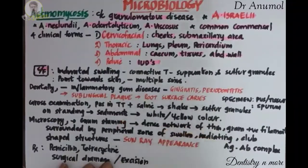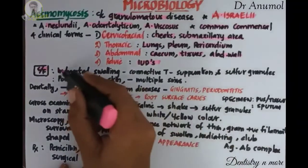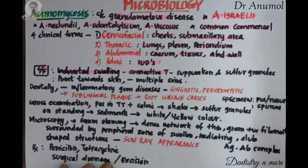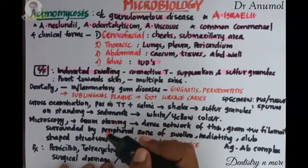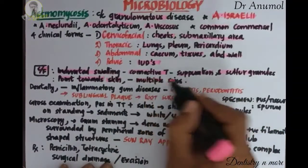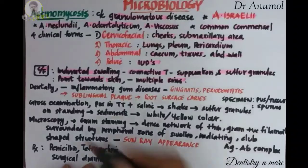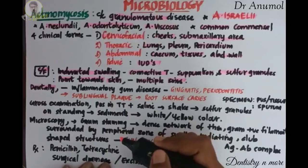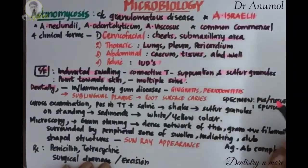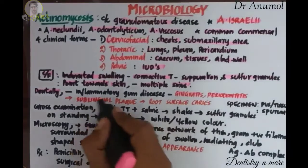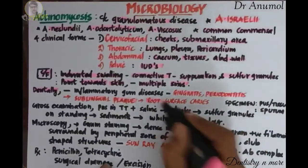The disease presents as indurated swelling commonly found in connective tissue. We can see suppuration and sulfur granules associated with this disease, which always points toward the skin, and multiple sinuses can be seen. Dentally, it is implicated in all types of inflammatory gum diseases like gingivitis and periodontitis, and also in sublingual plaque, which may cause root surface caries.